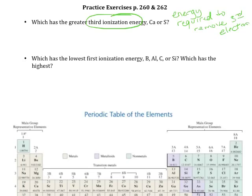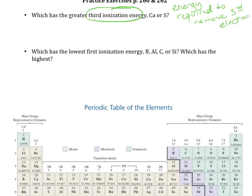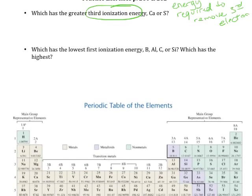The only way we can understand or compare the energy required to remove the third electrons from both of these elements is to figure out which energy level, which orbital, that third electron is in. So we want to find both of these on the periodic table — sulfur is here, calcium is here.